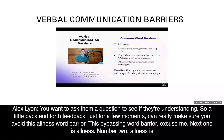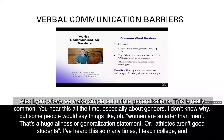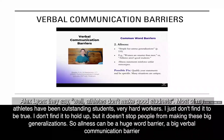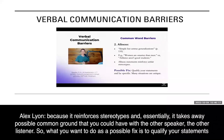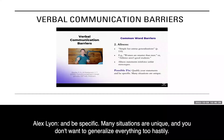The next barrier is allness. Allness is where we make simple but untrue generalizations. You hear this all the time, especially about genders — for example, 'women are smarter than men,' or 'athletes aren't good students.' Allness can be a huge verbal communication barrier because it reinforces stereotypes and essentially takes away possible common ground that you could have with the other person. A possible fix is to qualify your statements and be specific. Many situations are unique and you don't want to generalize everything too hastily.